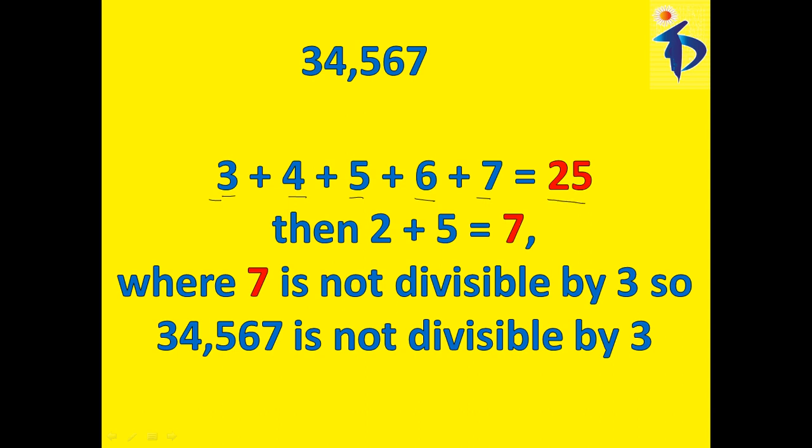So what? Here then it is 25. Then again I took the digits of 2 and 5. That is 2 and this is the digit 5. So 2 plus 5 is equal to 7. But we know that 7 is not divisible by 3, so 34,567 is not divisible by 3.